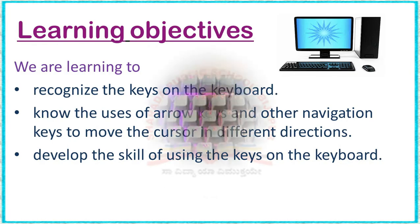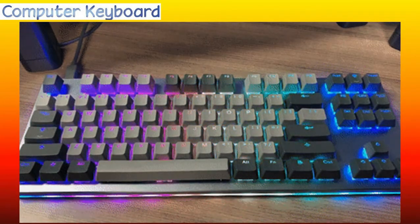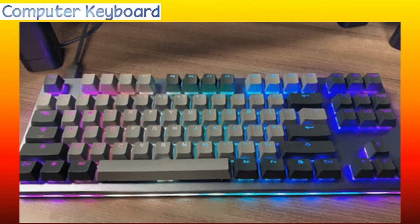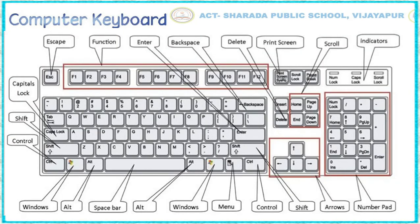Now we will move to the topic Computer Keyboard. Here you can see the colorful image of a keyboard. Let us understand keys on the keyboard. There are 104 keys available on each keyboard. They differ from one company to another company. All keys are divided into 5 different types.